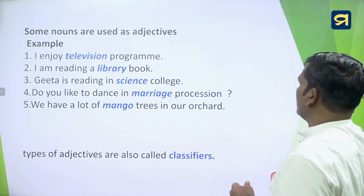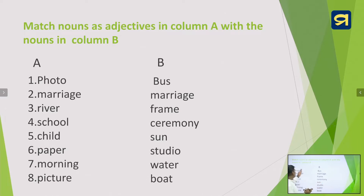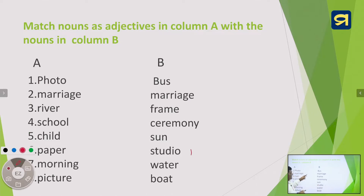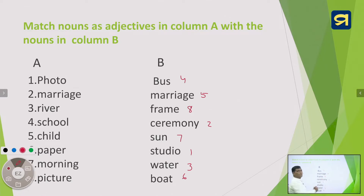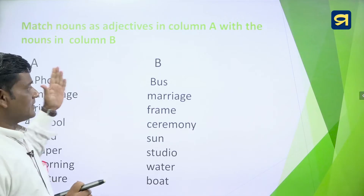Now look at a matching exercise. Some nouns are given in Column A and some in Column B. The nouns in Column A act as adjectives. Match them: photo → photo studio; marriage → marriage ceremony; river → river water; school → school bus; child → child marriage; paper → paper boat; morning → morning sun; picture → picture frame. This is how nouns are used as adjectives.